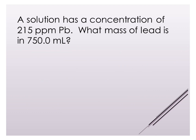Let's look at an example of how we would use parts per million in a calculation. A solution has a concentration of 215 ppm. What mass of lead is in 750 milliliters? The first thing we do is rewrite 215 ppm as 215 milligrams per liter. Parts per million and milligrams per liter mean exactly the same thing — it's just a different way of writing the same thing.